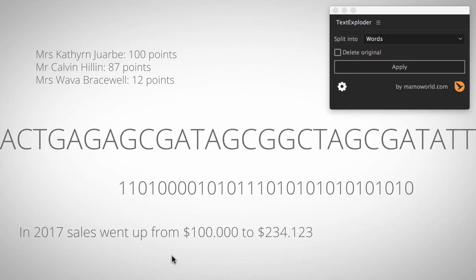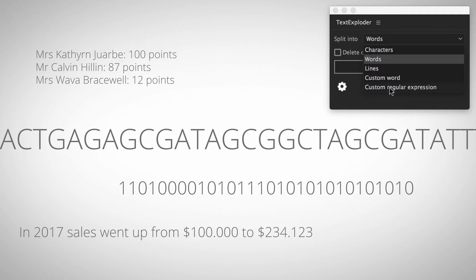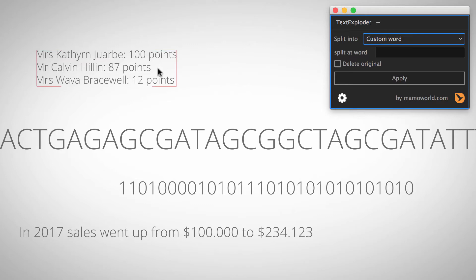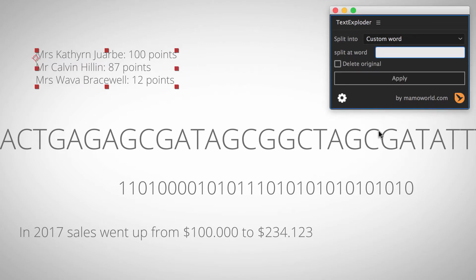You can be very precise with regular expressions to control exactly where to split your layers. But first I want to show you that often you don't even need custom regular expressions — using custom word is often good enough to keep things simple. For example, here we want to keep first and last names together. You can notice that all lines have a colon, so let's first split at the colon — enter colon, make sure we delete the original, and apply.